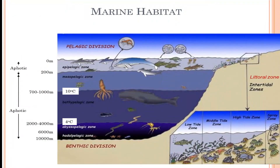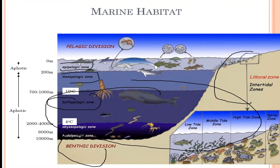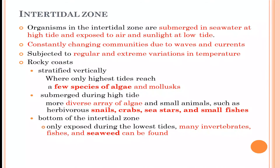In the marine habitat we can observe the littoral zone, the benthic zone at the bottom, and the limnetic zone in the middle. These are further subdivided into the epipelagic zone, mesopelagic zone, and bathypelagic zone, which will be discussed next.